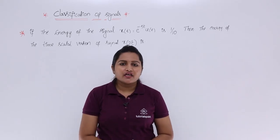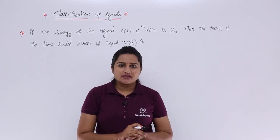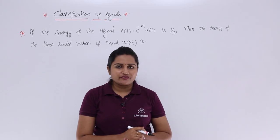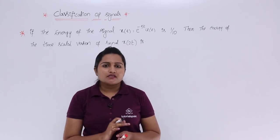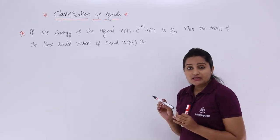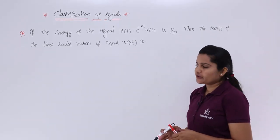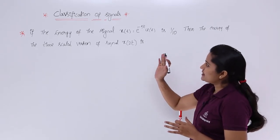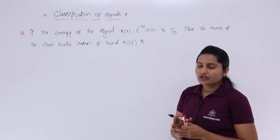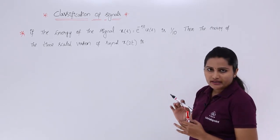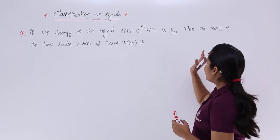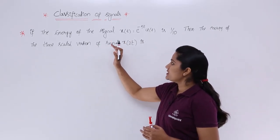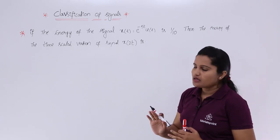In this video, we are going to discuss the energy of a time scaled version of a signal. Now see the problem here — this is a very important model for GATE. If the energy of the signal x(t) = e^(-5t)u(t) is 1/10, then what is the energy of the time scaled version x(2t)?